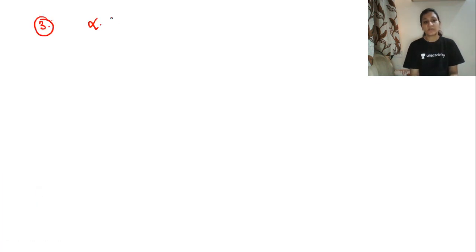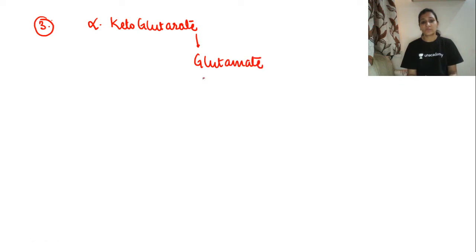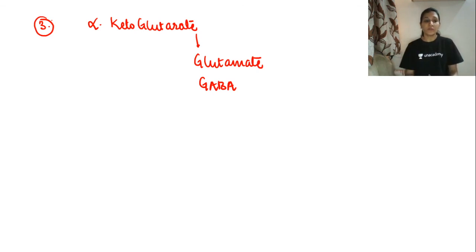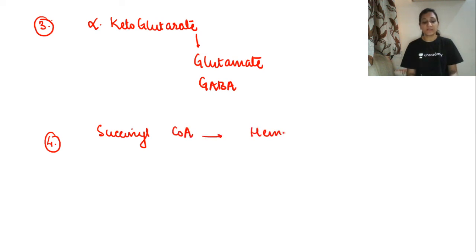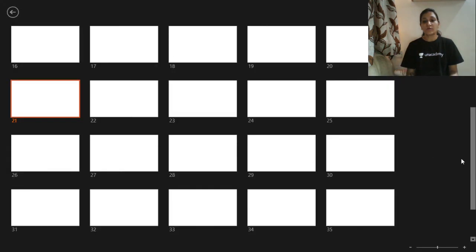The third intermediate, alpha-ketoglutarate, is used for synthesis of glutamate and GABA. Succinyl-CoA is used for synthesis of heme in the body and is also important for ketolysis.